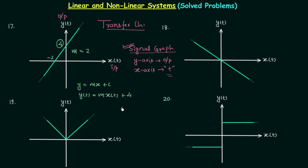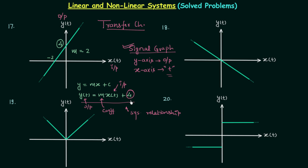Using our properties: whenever there is an added or subtracted term in the system relationship other than the output and input terms, the system is non-linear. In the relationship y(t) = m·x(t) + 4, we have the output y(t) and input x(t), but we also have the added constant 4. The coefficient m does not affect linearity, but the constant term does. Therefore the system is non-linear.